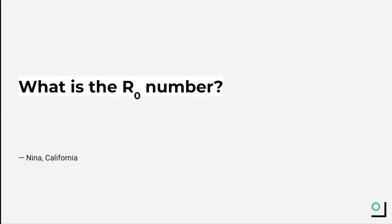Nina from California also asked about R with a little zero next to it, which is pronounced as R-naught. R-naught is different from R-effective because it represents the natural ability of a virus to spread, whereas R-effective is the actual or effective spread of a virus and takes into account changes such as public health measures or the development of a vaccine.